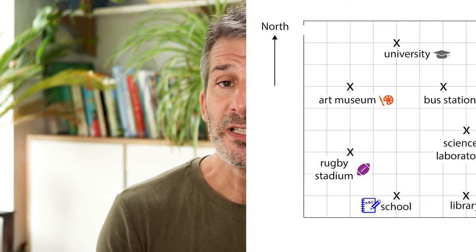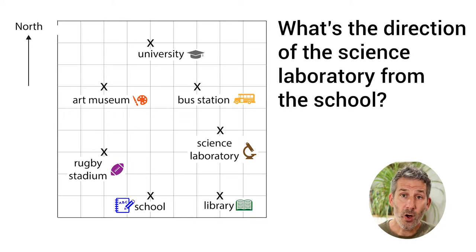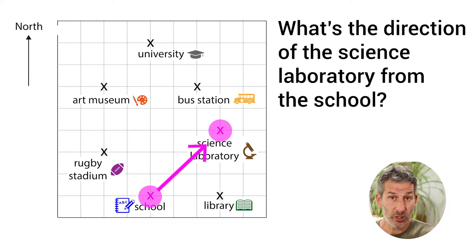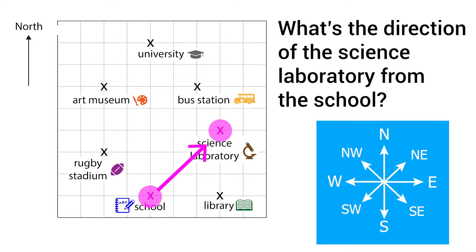Understanding the link between the two can be really helpful. When we talk about bearings we talk about the bearing of one place from somewhere else — that's the exact same thing we do for compass points. For example: what's the direction of the science laboratory from the school? We imagine we're at the school and identify what direction we'd travel to get to the science laboratory — northeast in this case. Bearings are just a way of putting a number on that direction so we can be more precise, but there are some rules we need to follow to make sure we're describing the exact same thing as everyone else.